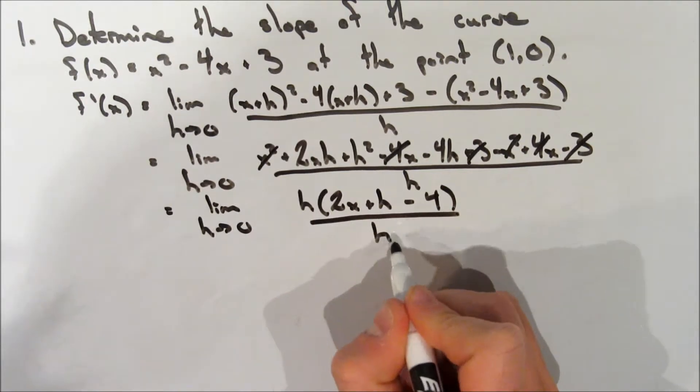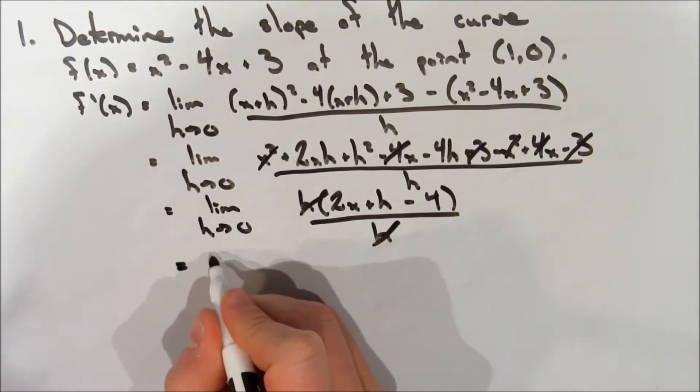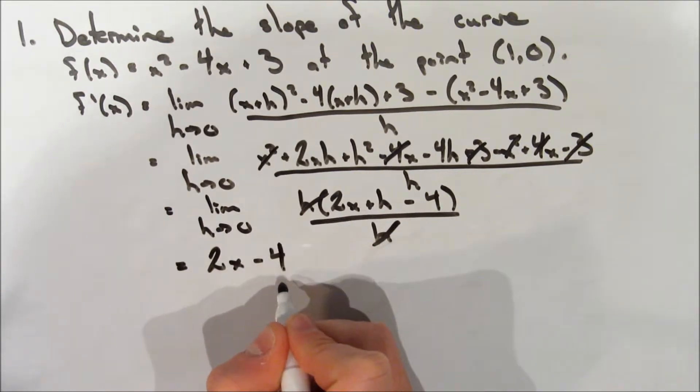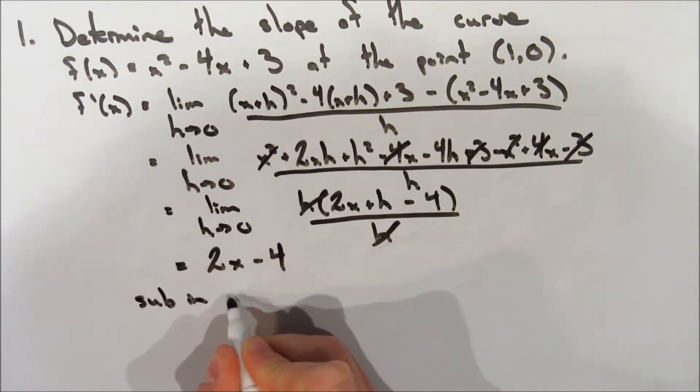So h multiplied by (2x plus h minus 4), all over h. So now we're going to take the limit as h approaches 0, so we're going to sub in 0 everywhere where there's an h, and we get our derivative, 2x minus 4.